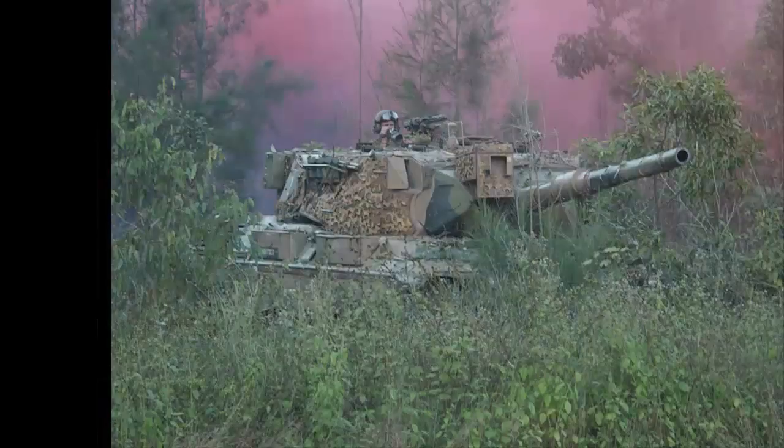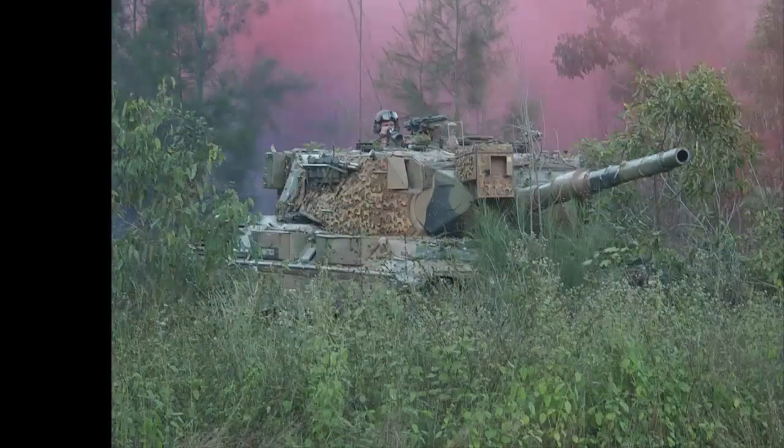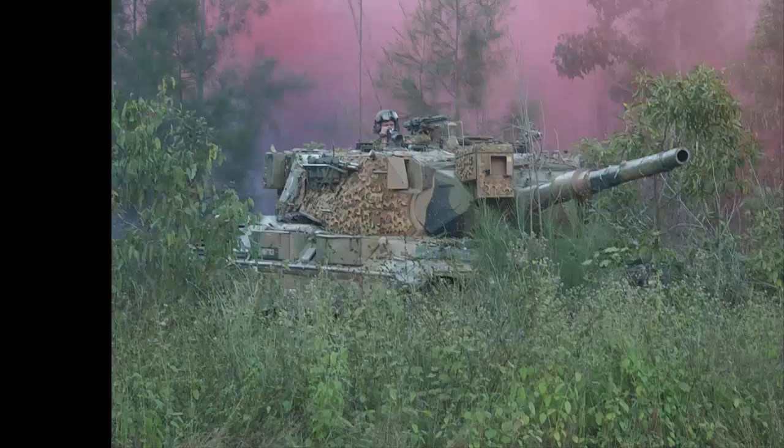The military tried to train a computer to spot tanks in the woods. The computer was first shown pictures of foliage with tanks and then foliage without tanks. It got to the point where it could distinguish them well in the training group. But when given a new set of photos, it flopped completely.